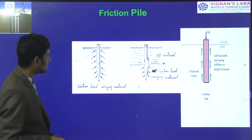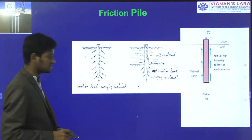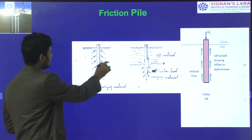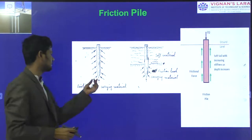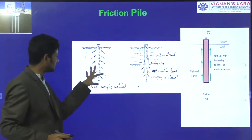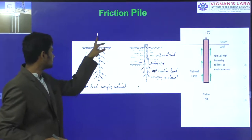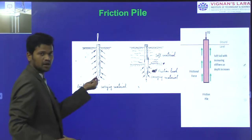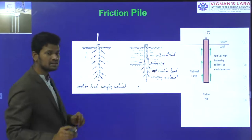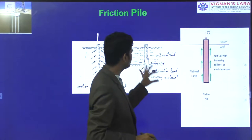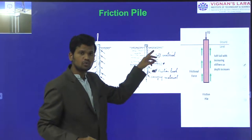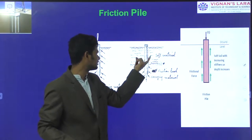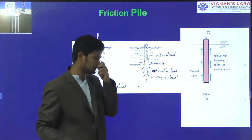This is how load carrying capacity works for the friction pile. In the friction pile, the load gets distributed laterally to the surrounding soil and also through end bearing at the bottom. The friction pile transfers the load to surrounding soil as well as to the bottom of the material. This is the soft material where friction resistance is provided.